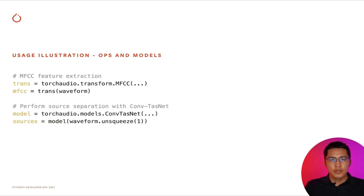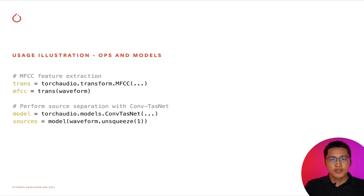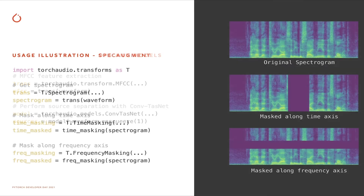Operations in the torchaudio.transforms module are implemented using PyTorch's module class. You can define an operation by instantiating a transform, then pass the input tensors to perform the actual computation. Similarly, you can configure your model at construction and run computation by passing input tensors. This example shows how to use SpecAugment, a popular augmentation technique. With TorchAudio, you can apply it with just a few lines of code.